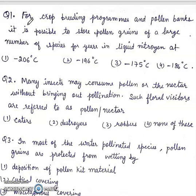Question 1. For crop breeding programs and pollen banks, it is possible to store pollen grains of a large number of species for years in liquid nitrogen at: 1. minus 206°C, 2. minus 196°C, 3. minus 175°C, 4. minus 186°C. Right answer will be 2nd, minus 196°C.